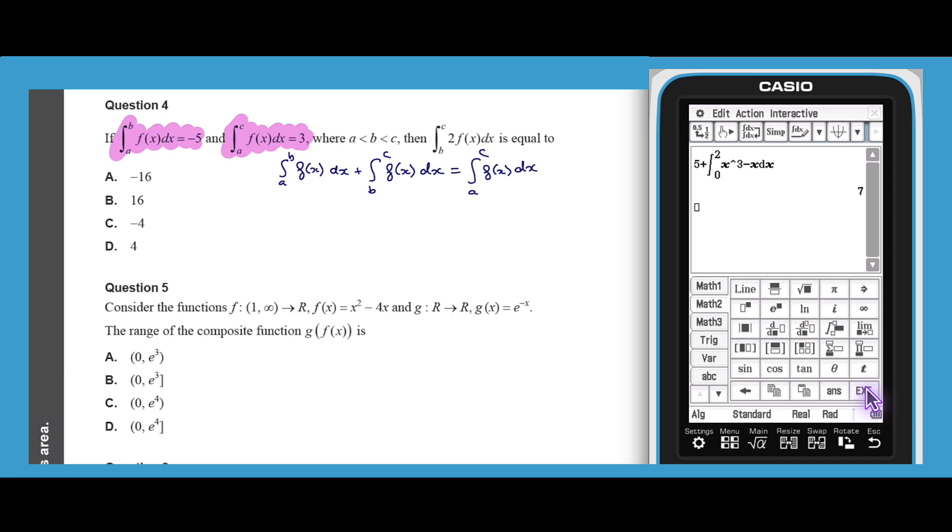Into this statement we can substitute the definite integral values that we have been given, and with a little rearrangement we can find that the definite integral from b to c of f of x is equal to 8. Using definite integral properties, we know that the definite integral of 2 times f of x is equal to 2 times the definite integral of f of x, and so our answer is 2 times 8, which is 16.